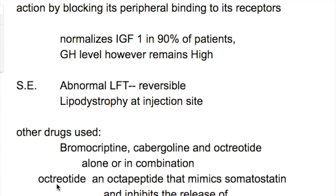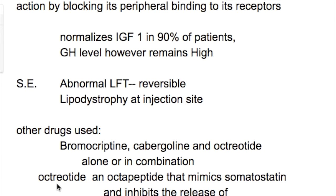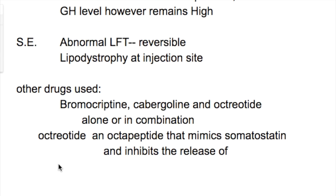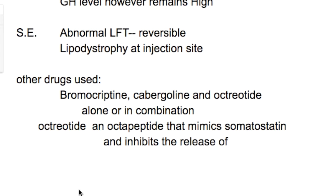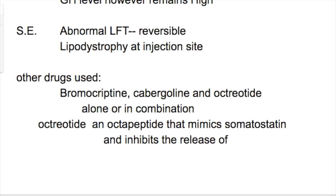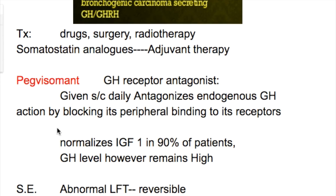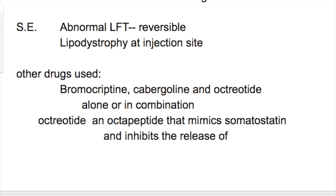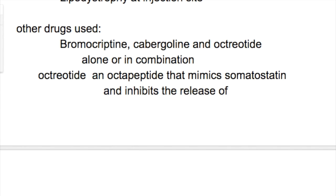Other drugs used are Bromocriptine, Cabergoline, and Octreotide, alone or in combination. Octreotide is an octapeptide that mimics somatostatin and inhibits the release of growth hormone. The difference between Octreotide and Pegvisomant is that Pegvisomant prevents growth hormone action at its receptor, while Octreotide inhibits the release of growth hormone. Octreotide also inhibits the release of glucagon, gastrin, and insulin.